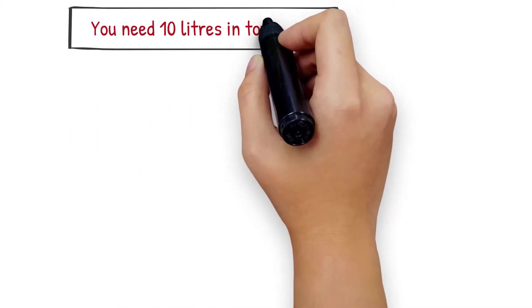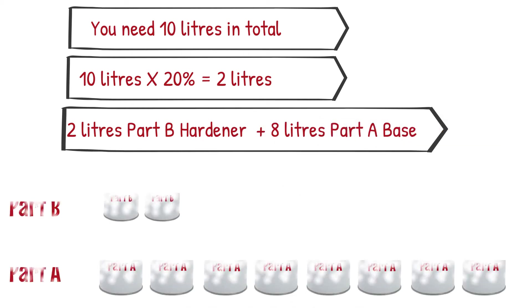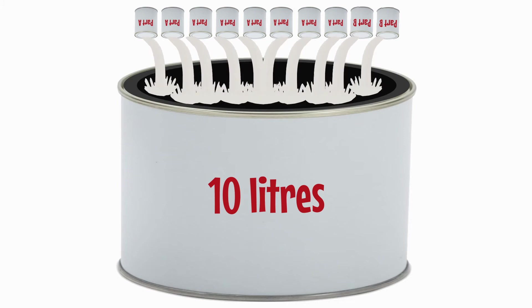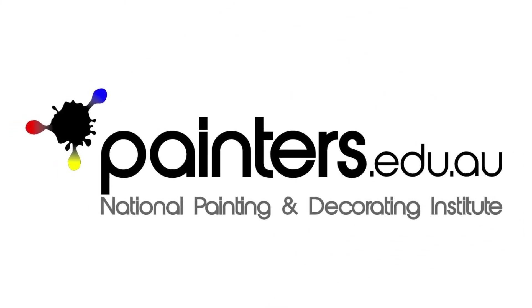For example, you need 10 litres in total. 10 litres times 20% equals 2 litres. 2 litres Part B hardener plus 8 litres Part A base.